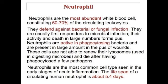Neutrophils are the most abundant of the white blood cells, constituting about 60 to 70% of the circulating leukocytes. They defend against bacterial or fungal infection and are usually the first responders to a microbial infection. Their activity and death in large numbers forms what we call pus. Neutrophils are active in phagocytosing bacteria and are present in large amounts in the pus of wounds. These cells die after they phagocytize a few pathogens. Neutrophils are the most common cell type seen in the early stages of acute inflammation, and the lifespan of a circulating human neutrophil is about 5.4 days.